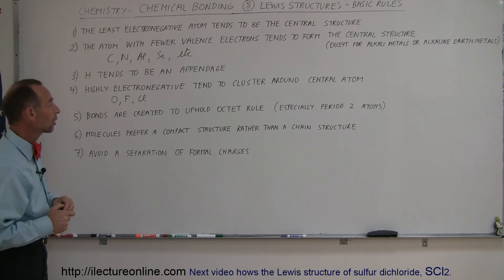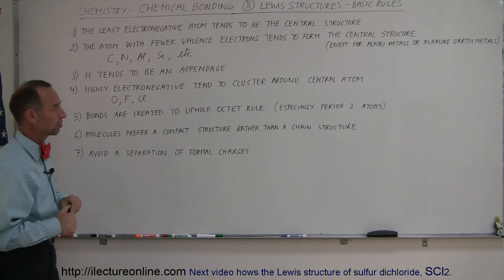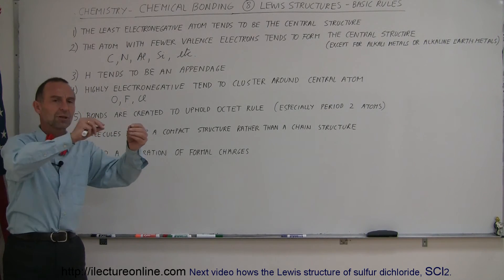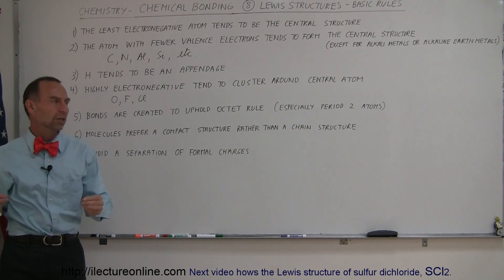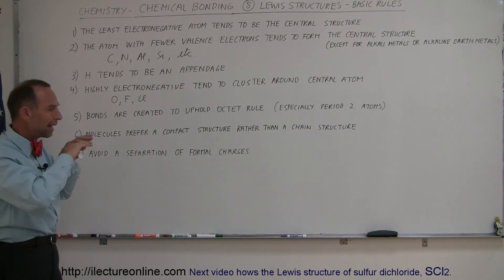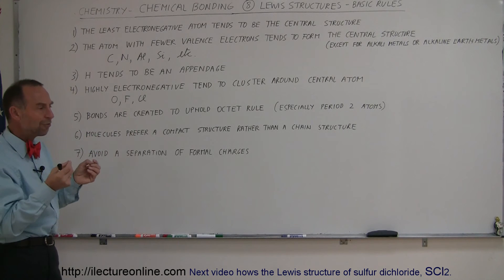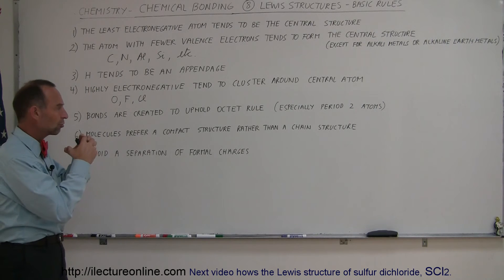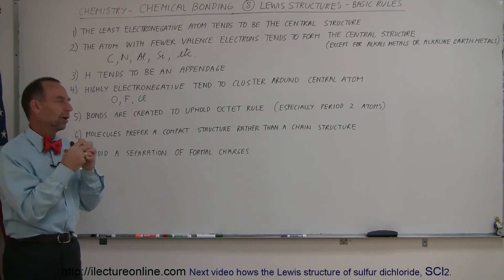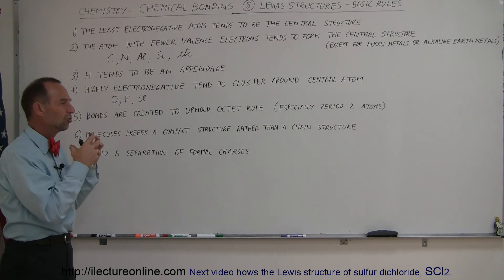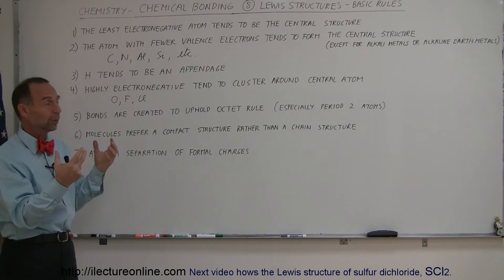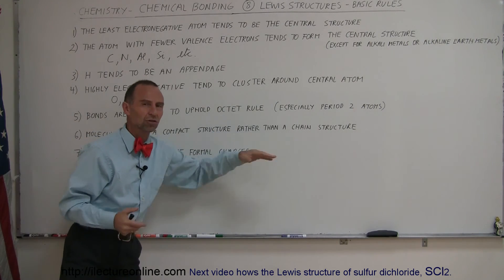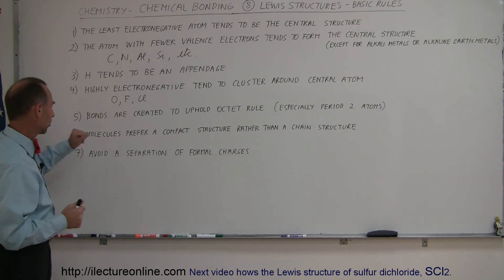Number six: molecules prefer a compact structure rather than a chain structure. Sometimes we have options — we could string them all in a long chain, or we can have them clustered together. What we find is that ultimately the clustering around more central structures is the preferred energy state that these atoms want to be in when they bond to get into molecules. So we'll see less of the chain-type structures and more of the clump-like structures.